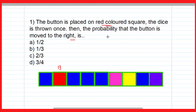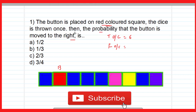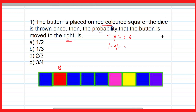There is a dice with six numbers. When you throw a dice, you will get either one, two, three, four, five, or six. Therefore the total outcome is six. The favorable outcome — it is asked what is the probability that the button is moved to the right. The button moves to the right when five or six turns up, meaning there are two favorable outcomes. Therefore the probability is 2/6, which simplifies to 1/3.